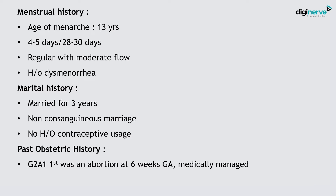Menstrual history: menarche at 13 years of age, 4-5 days flow every 28-30 days interval, regular with moderate flow, history of dysmenorrhea. The LMP history is very important — she may have missed a period, or the next period may only be spotting, representing implantation bleeding. Dysmenorrhea suggests endometriosis or previous PID, which are predisposing causes of ectopic pregnancy.